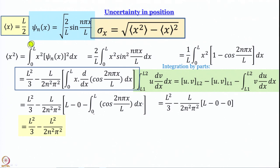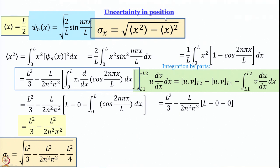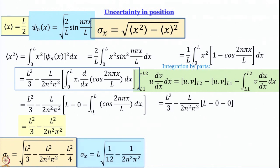Now let us work out the expression under the square root sign: average value of x² minus the square of the average value of x. We work it out and then put it under the square root sign. The final answer that we get is L multiplied by the square root of 1/12 minus 1/(2n²π²).